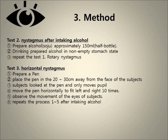Test 2 is Nystagmus after intake of alcohol. Prepare approximately 150ml of SOJU alcohol, which is half a bottle. Drink the prepared alcohol on a non-empty stomach. Then repeat Test 1, Rotary Nystagmus.